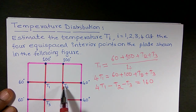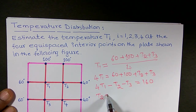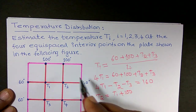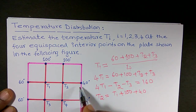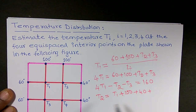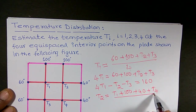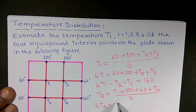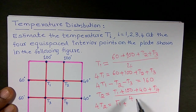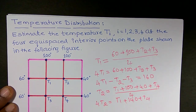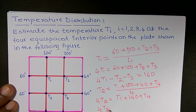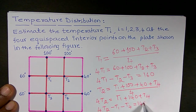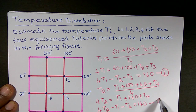Similarly, T2 can be written as T2 equals (T1 + 100 + 40 + T4) divided by 4. Rearranging, 4T2 minus T1 minus T4 equals 140. Call this equation 1. This is the second equation.